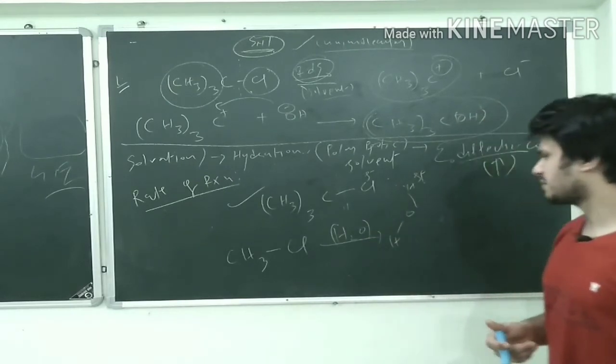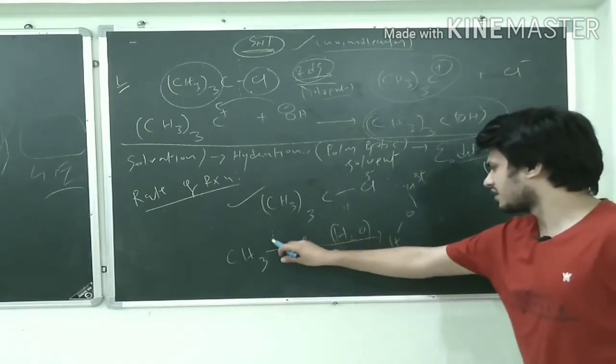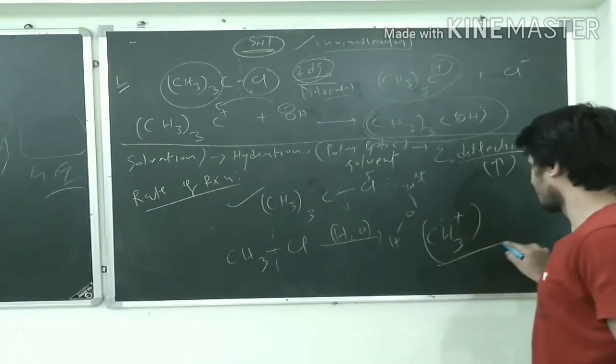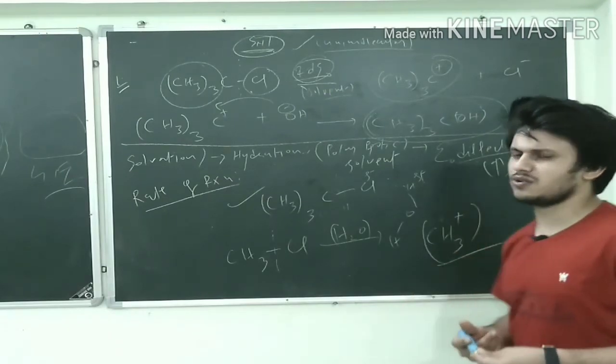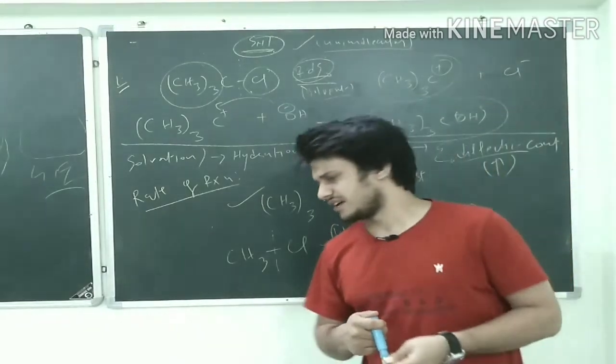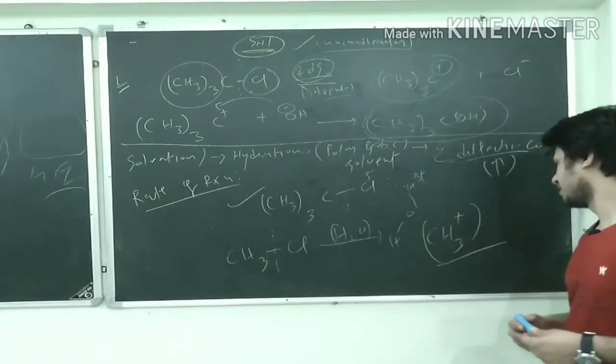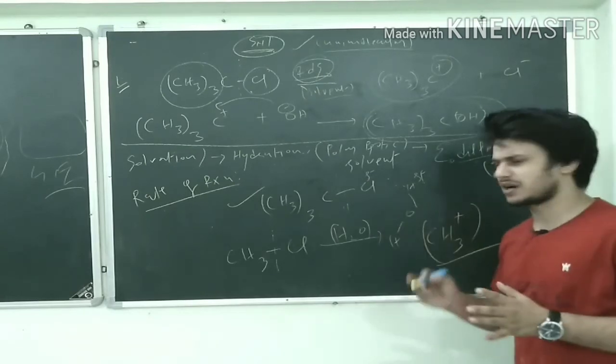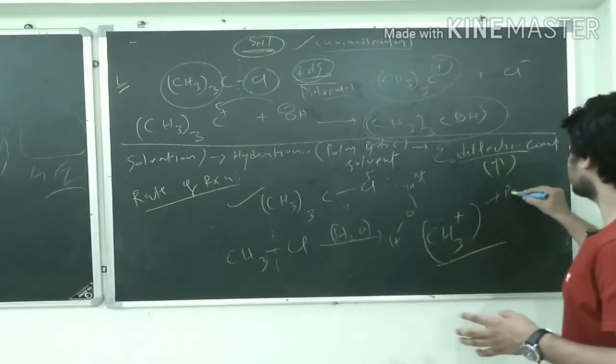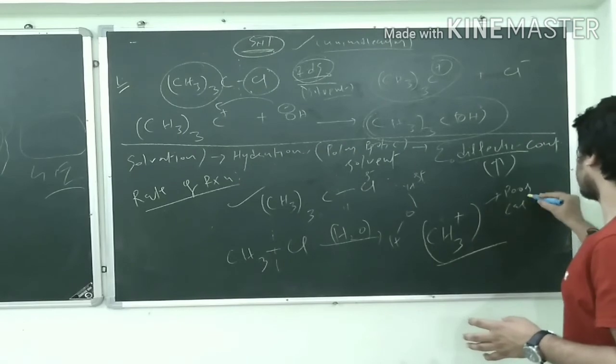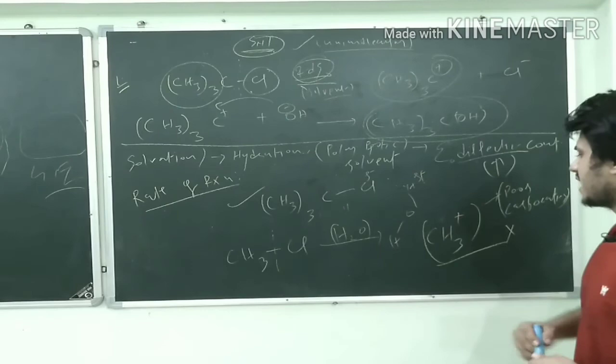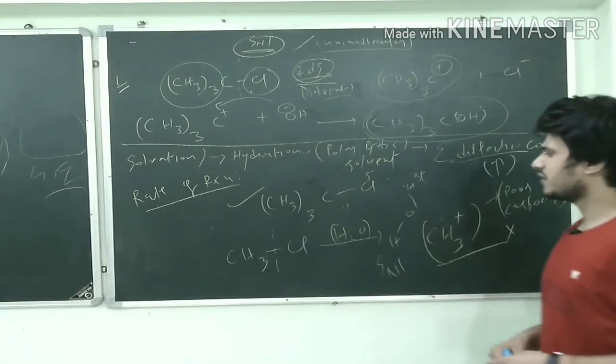So what type of carbocation you can get is something like this: CH3+. Is it a good carbocation? No, not at all, because it doesn't have hyperconjugation. It is not stabilized by inductive effect, neither by resonance. It is a poor carbocation. So in such type of reactions if you have such a carbocation formation, then you cannot get the product via SN1 mechanism.